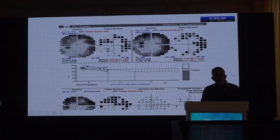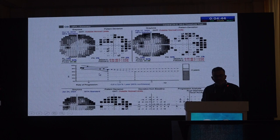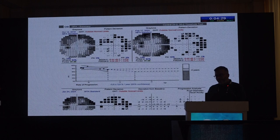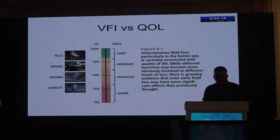The GPA printout requires two years and five fields of data before it is automatically generated. Make sure to ask for this GPA summary printout at the appropriate time. Target IOP is dynamic — you set an initial figure, serially repeat fields and OCT-RNFL, look for progression, and if progression is too rapid, revise the target IOP downward.